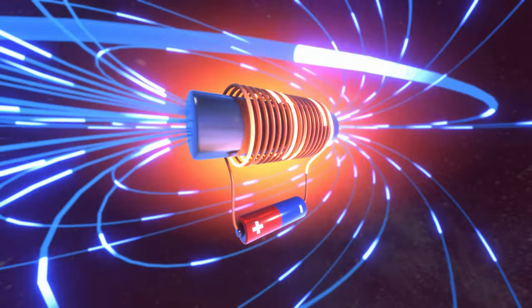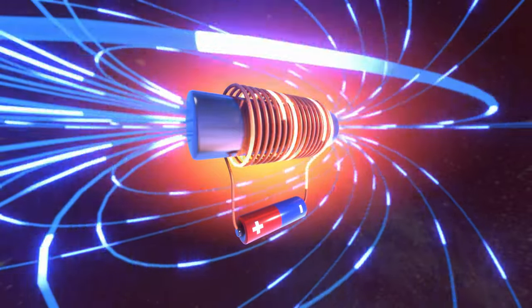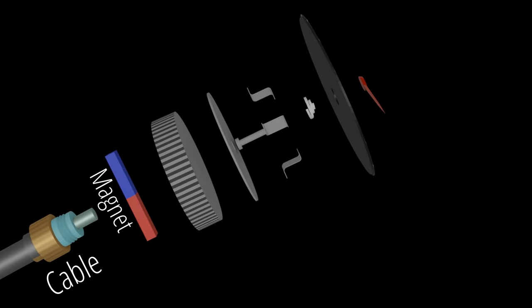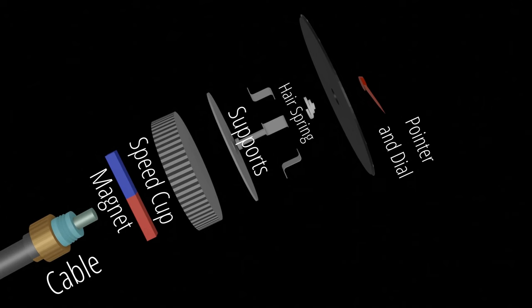The answer is to use electromagnetism. Our speedometer has a flexible and bendy cable connected to the wheel, a magnet inside a hollow speed cup, a hairspring, a pointer, a dial, and some supports.